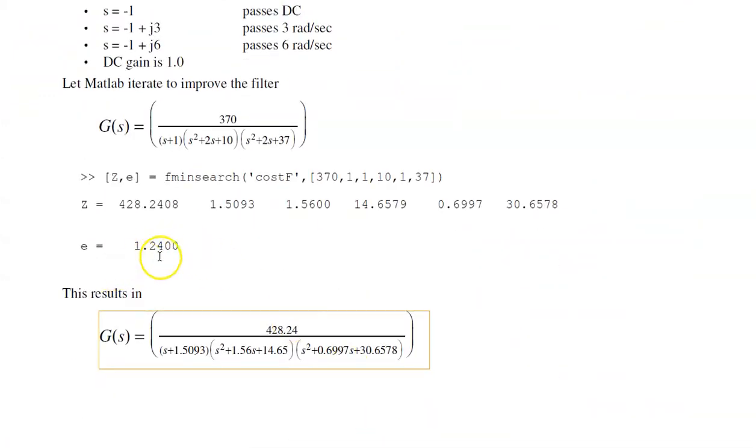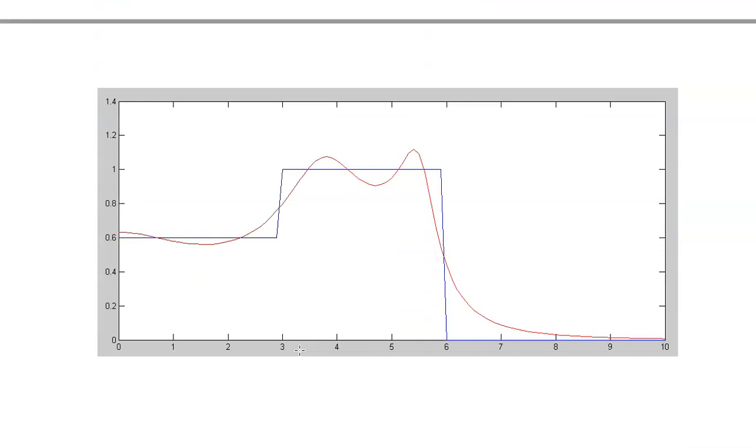And eventually comes up with an answer. The answer I got went up with the sum squared error of 1.24, and here's the parameters. And that's what the gain looks like versus frequency.